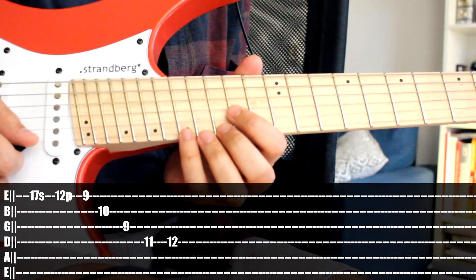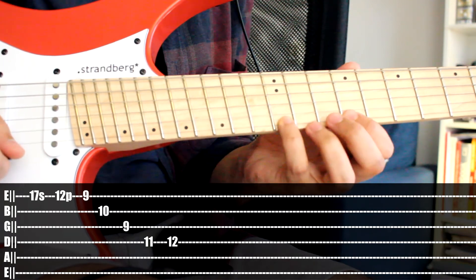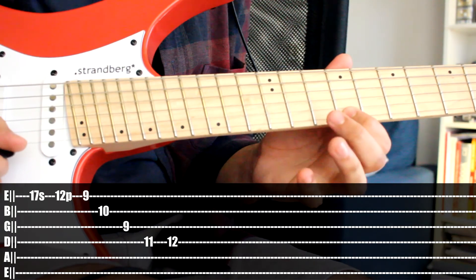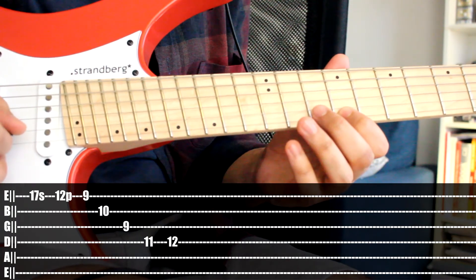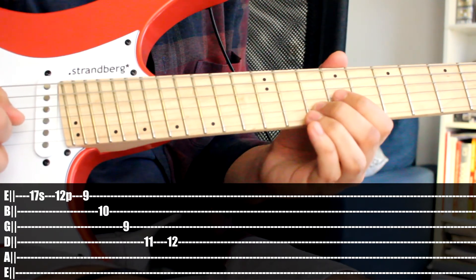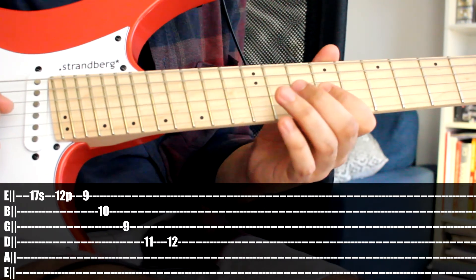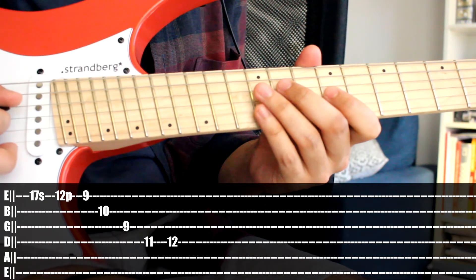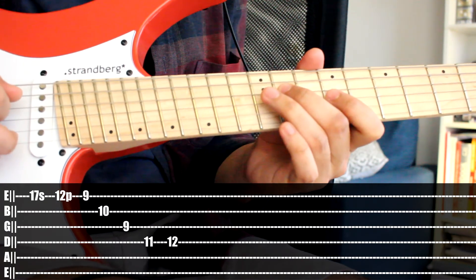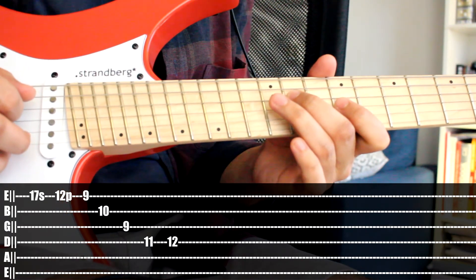Last pattern: slide from 17 to 12, pull off from 12 to 9, sweep upwards, B string 10, G string 9, D string 11, and then on the same D string, 12.